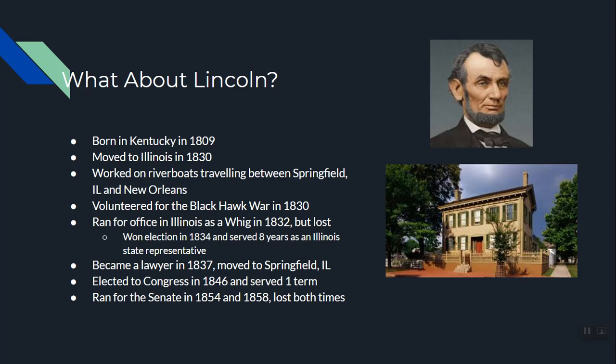What does Lincoln have to do with this? Abraham Lincoln was born in Kentucky in 1809. He's not very educated — moves to Indiana as a child and eventually to Illinois in 1830. He volunteers for service in the Black Hawk War, then runs for office in Illinois in 1832 as an anti-slavery Whig. In 1837, he moves to Springfield, Illinois, where he opens a law office — you can see a picture of the only house he ever owned. He also goes to Congress.